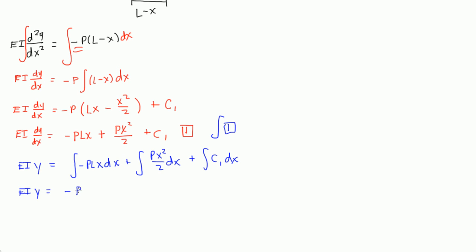Plus the integral of x² because I can actually factor out this P/2, so I'd get P/2, and then the integral of x² would be x³/3. Plus the integral of this constant is c1 times x, and since I integrated a second time, I have to add a second constant.